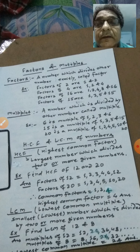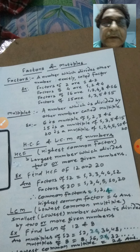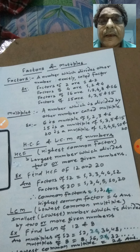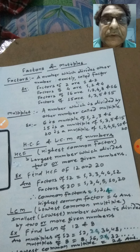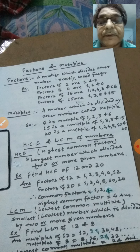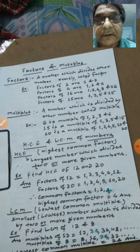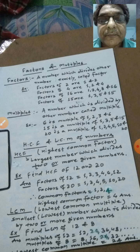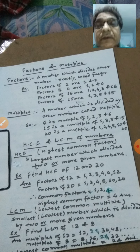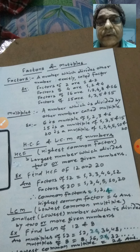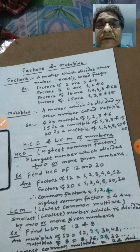Yaani, hum logon ne yahan par do cheez seekha. Ek, jo doosre ko divide kar de, woh factor hai. Aur woh number jo khud divide ho jaye, woh multiple hai. Ab isi aadhar par hum log dekhenge ki HCF aur LCM kya hota hai.